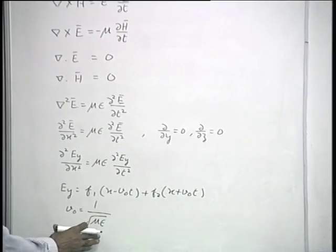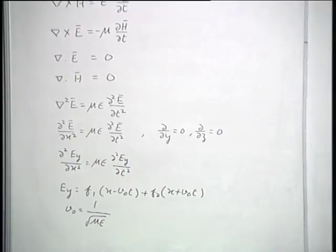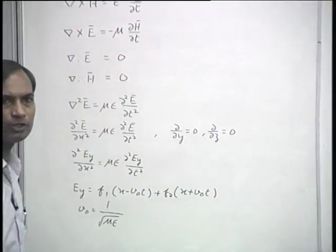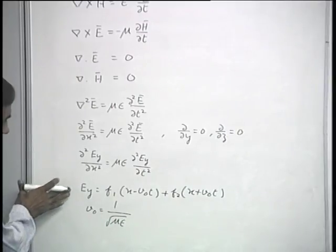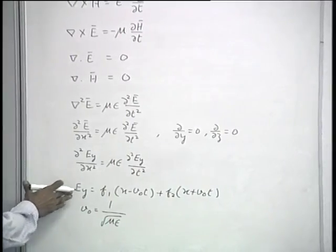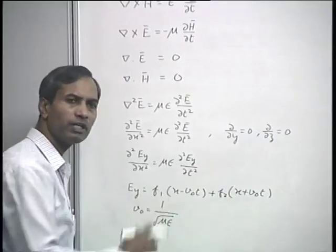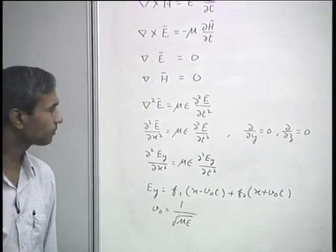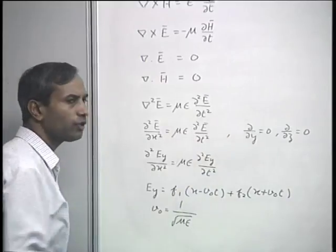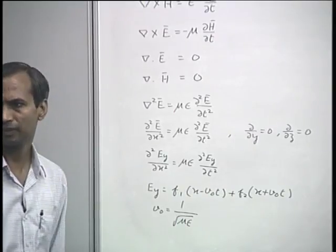Here mu and epsilon are the permeability and permittivity of the medium. Since we are considering free space or a perfect dielectric, conductivity does not appear in this expression. We identified the solutions for E_y as propagating waves — one in the positive x direction and one in the negative x direction, their proportions depending on boundary conditions. This case of no variations with respect to y or z is known as the case of uniform plane waves.